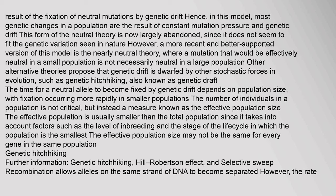The time for a neutral allele to become fixed by genetic drift depends on population size, with fixation occurring more rapidly in smaller populations. The number of individuals in a population is not the critical factor; instead, a measure known as the effective population size is used. The effective population is usually smaller than the total population, since it takes into account factors such as the level of inbreeding and the stage of the life cycle in which the population is the smallest. The effective population size may not be the same for every gene in the same population.